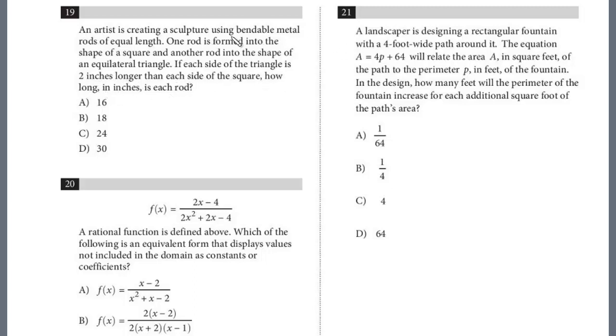So you first have to recognize that he's using these bendable rods. One rod is formed into a shape of a square, the other into the shape of an equilateral triangle. So the rods are equal. And that means the perimeter of this square equals this equilateral triangle. And they tell us that if each side of the triangle is two inches longer, we just have to figure out how long the rod is.